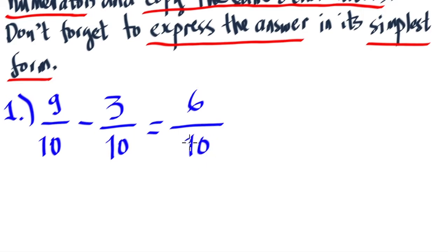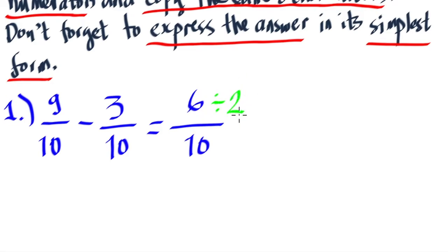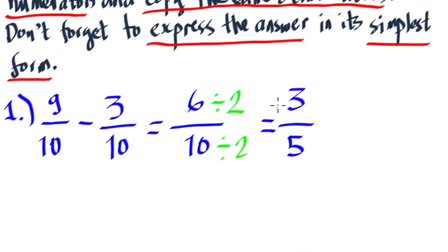Don't forget to express the answer in its simplest form. We can see from here that 6 over 10 can be simplified. They have a greatest common factor of 2. So, we divide the numerator by 2: 6 divided by 2 is 3, and 10 divided by 2 is 5. Our answer for number 1 is 3 over 5.